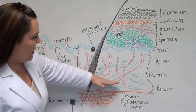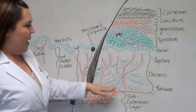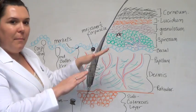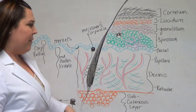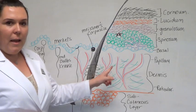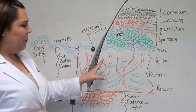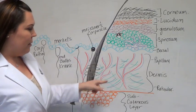Next layer up is the dermis. There's two layers to the dermis: the reticular, which is the bottom half, and the papillary layer, which is the upper half. In the dermis, you need to know there are blood vessels and arteries that supply blood and nutrients to the upper layer as well as the dermis.